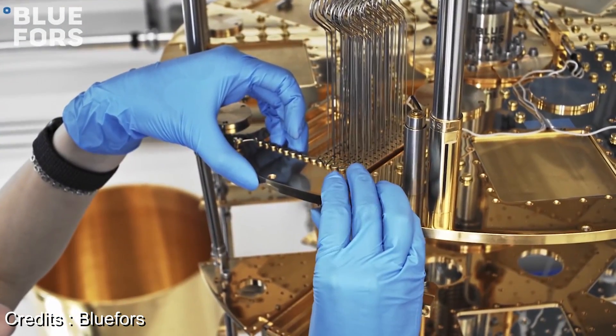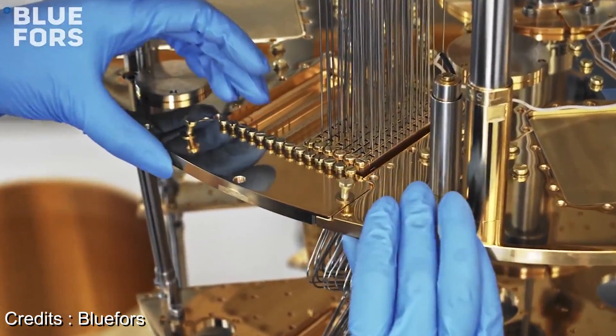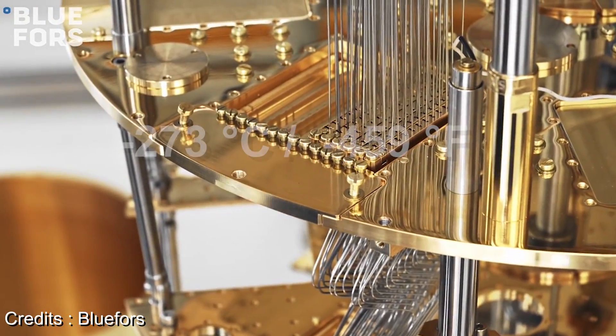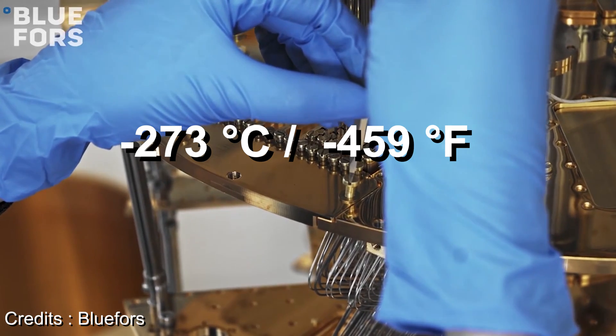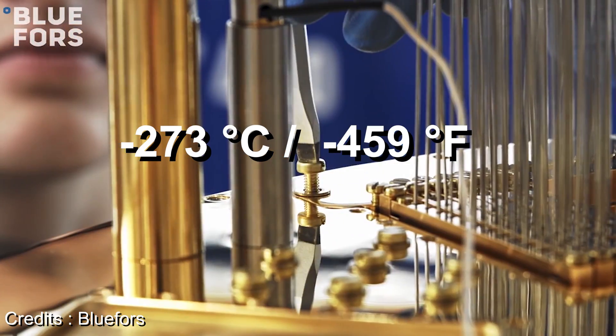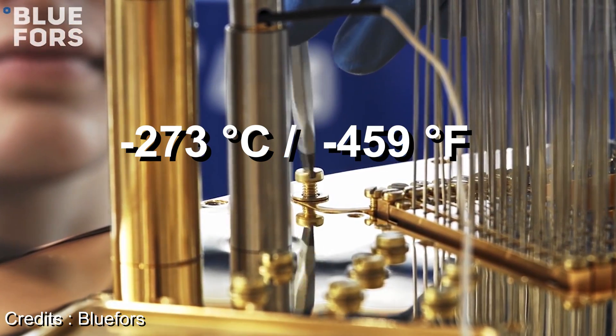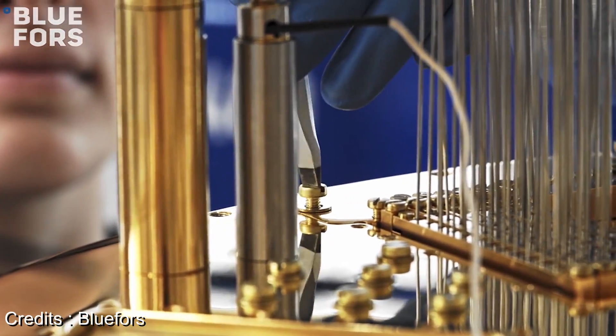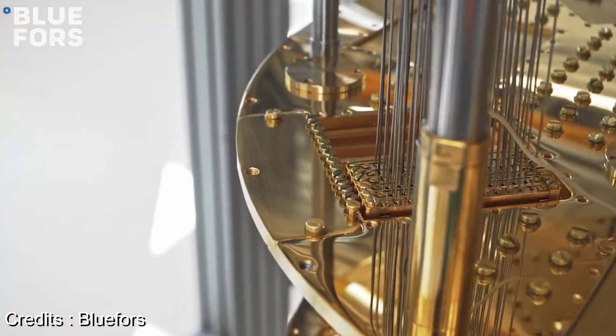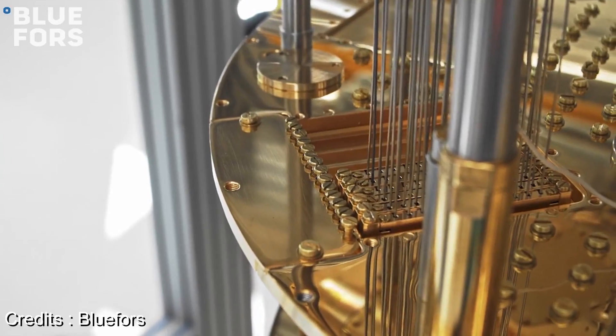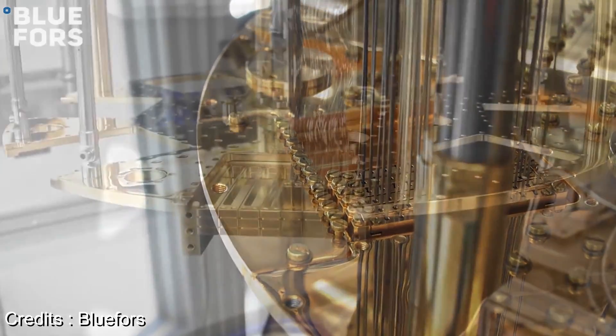The most popular approach today is to put them in a fridge that cools them to the absolute zero, minus 273 degrees Celsius, or minus 459 degrees Fahrenheit. These fridges are masterpieces of engineering, but it's absolutely impossible today to put all the stuff required to make 20 million qubits work in it.